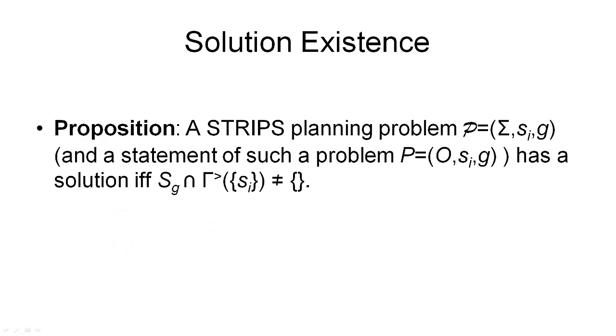And here is why I've given you such a complex definition. Because with this definition, I can very simply state when a planning problem has a solution. So we can state that a STRIPS planning problem, defined by a state transition system, initial state and goal, or a statement defined by the operators and the initial state and the goal, has a solution if and only if the following holds.